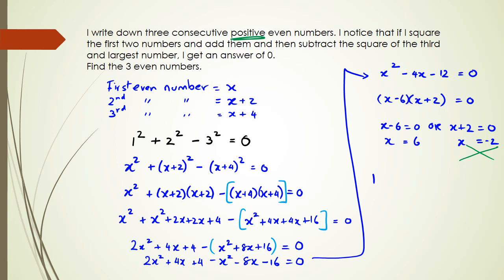That means our first even number is equal to six, and our second even number is equal to eight, and our third even number equals ten. And if you think about it, six squared plus eight squared minus ten squared, well that's actually equal to 36 plus 64 minus 100. And then 100 take away 100 is equal to zero. So that's how you know you're on the right track.